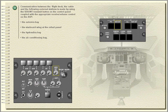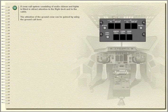Communication between the flight deck, the cabin, and the following external stations is made by using the service interphone transmit button on the control panel, coupled with the appropriate receive volume control on the audio selector panel: the avionics bay, the starboard wing at the refuel panel, the hydraulics bay, and the air conditioning bay. A crew call system consisting of audio chimes and lights is fitted to attract attention in the flight deck and in the cabin. The attention of the ground crew can be gained by using the ground call horn.